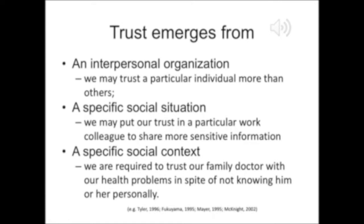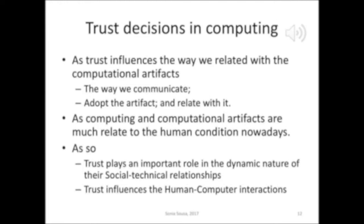This means that we might trust a particular individual more than others, even in a specific situation. For example, we might trust a particular work colleague in specific contexts. This also happens in a specific social context, like family doctor and patient. We are required in this context to trust our family doctor with our health problems, in spite of not knowing his or her personal life. We act guided by our trust decisions and conclusions.